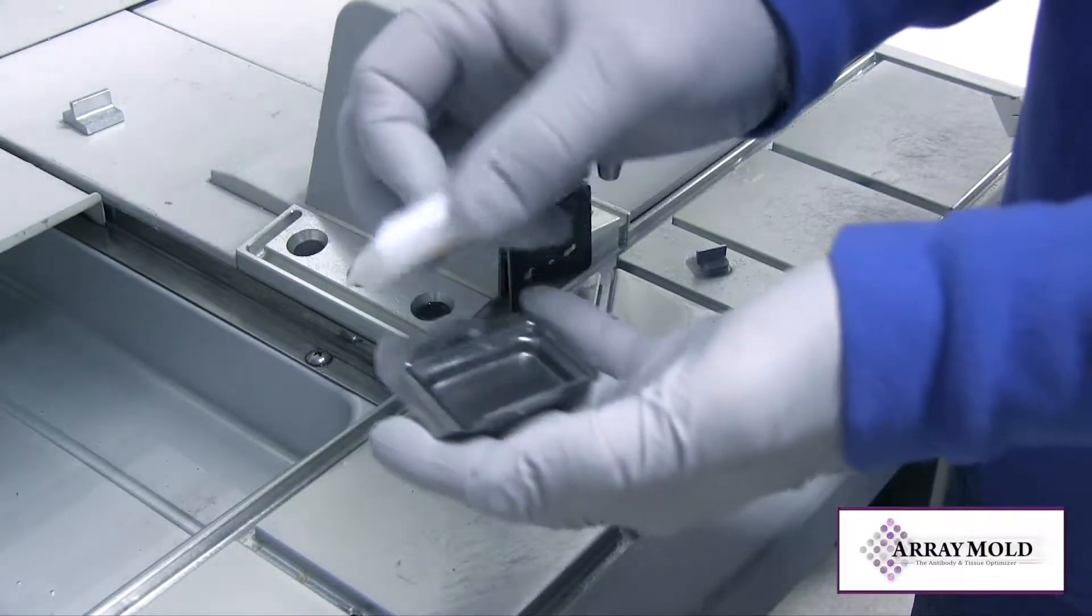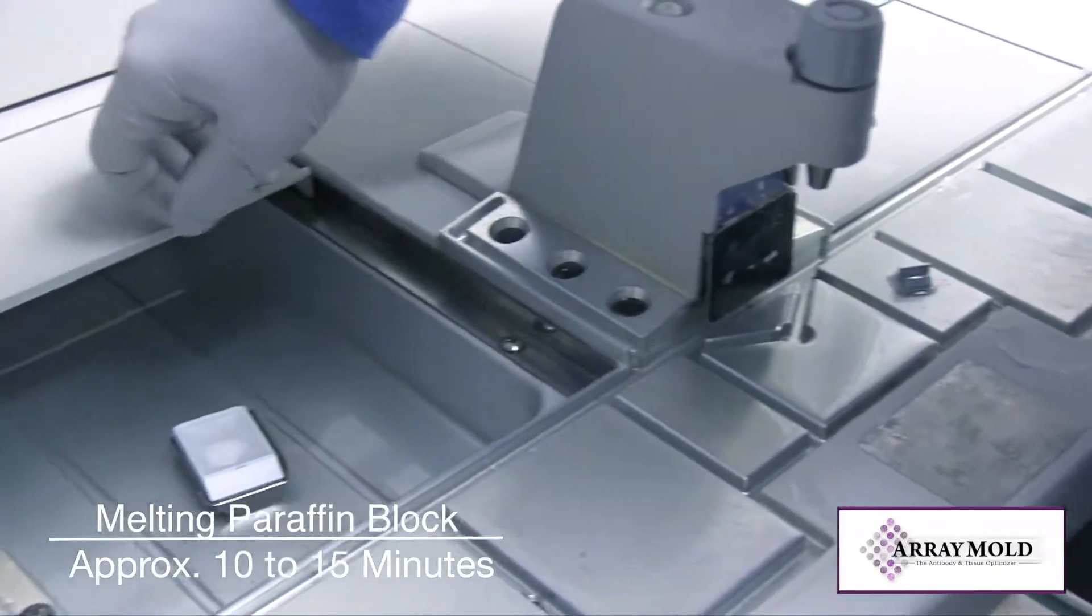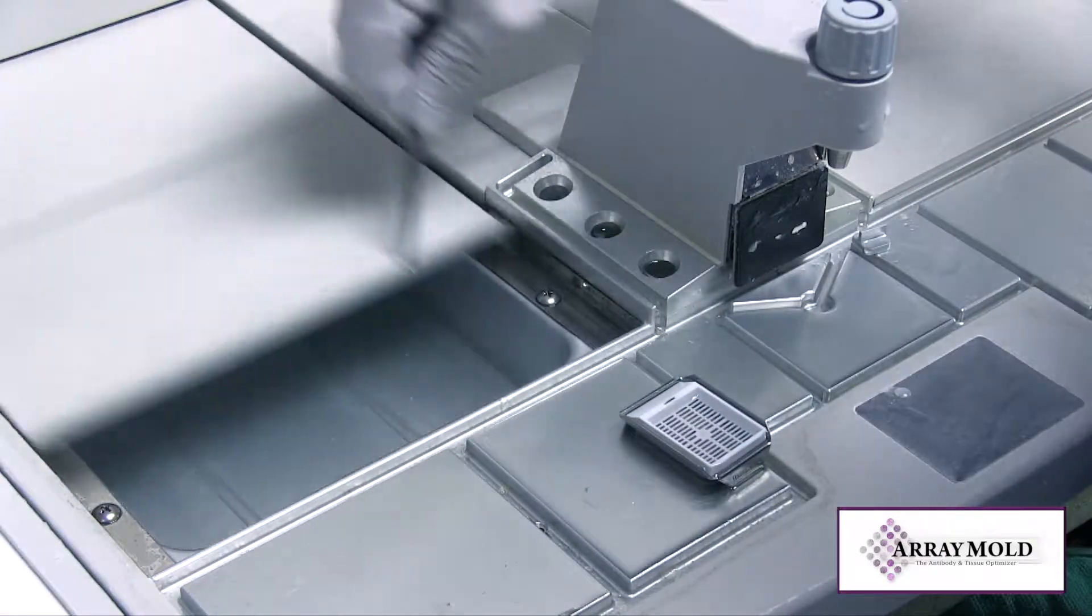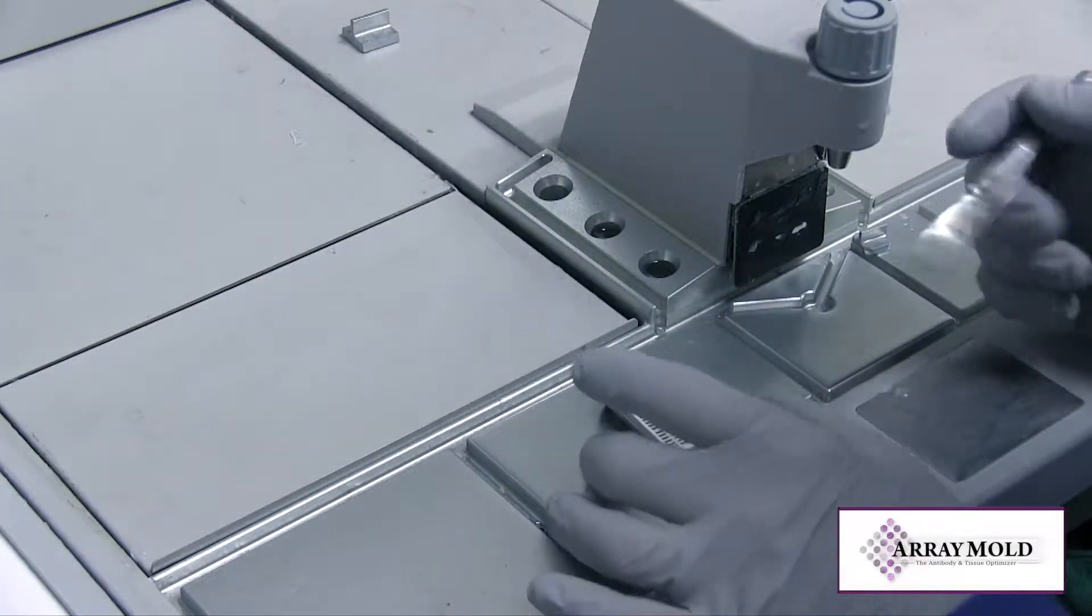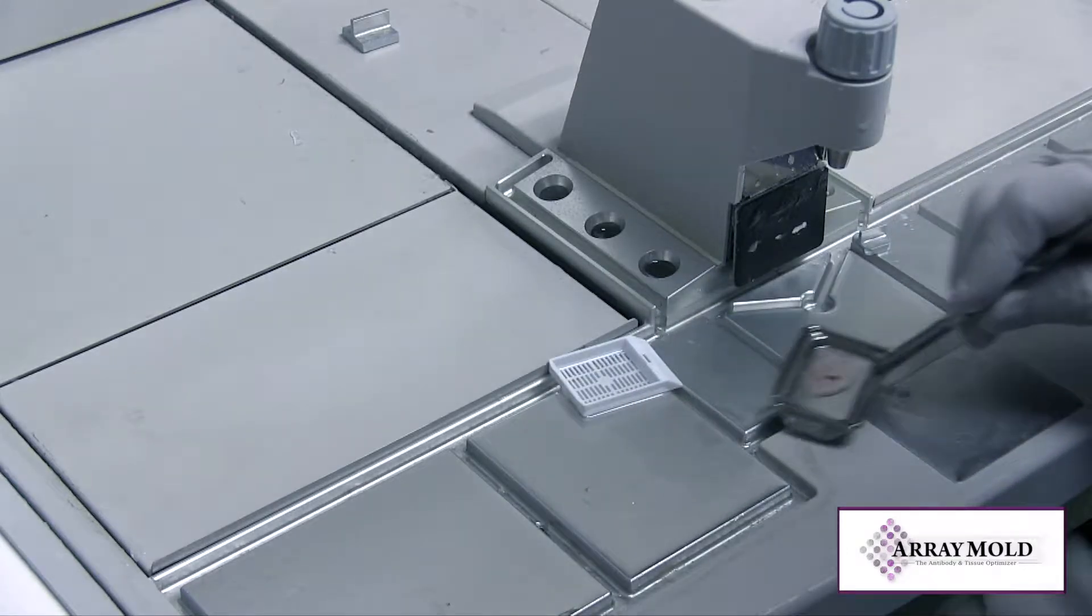The normal process: the paraffin block is melted down. This is necessary if the block has been chunked out while sectioning or cracked and damaged in some way that requires a total re-embed. This procedure normally takes anywhere between 20 and 30 minutes before the paraffin block is cold enough to be re-cut.